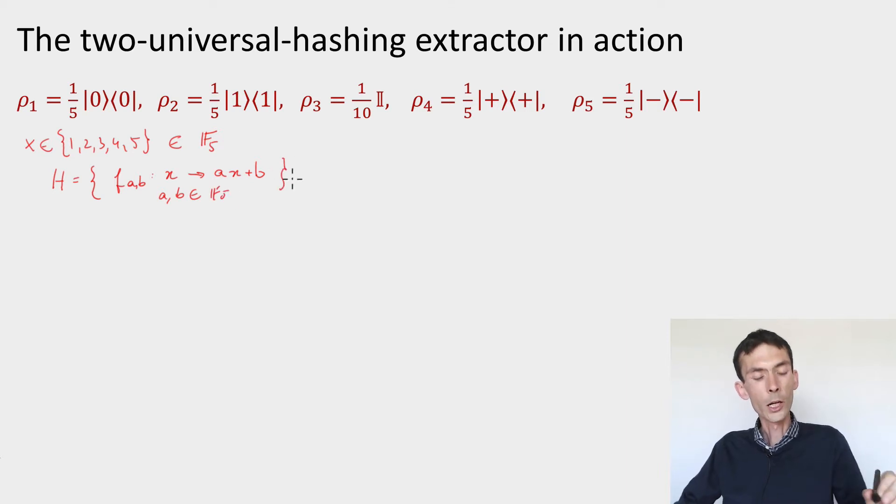So this is going to be our family of hash functions and then the extractor will take as input an x and the label of a hash function, so a pair a and b, this is our seed y, and we'll map it to f_ab of x, except that we actually want to hash these down so we want the output length to be smaller than the input length.